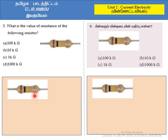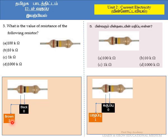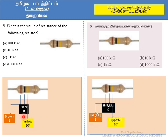If we know the table clearly, it is much easier to identify the answer. From the table: the first color, brown, has a value of 1. The next color, black, has a value of 0. We hold the resistor with the gold or silver or colorless portion on the right-hand side. The first color represents the first digit, the second color represents the second digit, the third color represents the multiplier, and the final color represents the tolerance. So: brown = 1, black = 0, yellow has a multiplier value of 10 to the power 4.